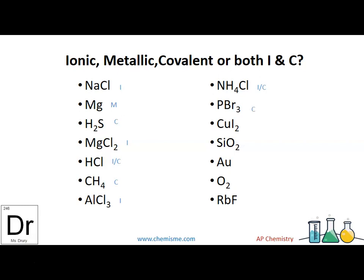PBr3 is covalent. CuI2 is ionic. SiO2, covalent. Au is just gold, metallic. Oxygen, covalent. And RbF, ionic.